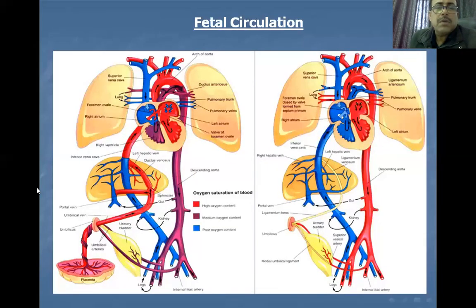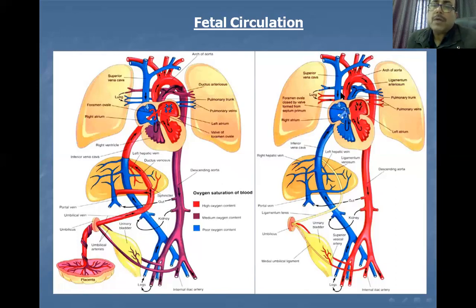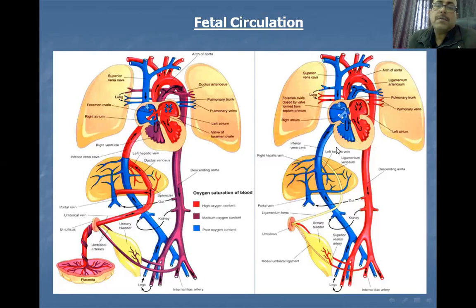To understand fetal circulation, you must first understand adult circulation. Deoxygenated blood from the peripheral parts of the body comes via the inferior vena cava into the right atrium, then into the pulmonary artery into the lungs where it is purified. It then returns via the pulmonary veins into the left atrium, is pumped into the aorta for systemic circulation. In infants, there are certain bypasses.